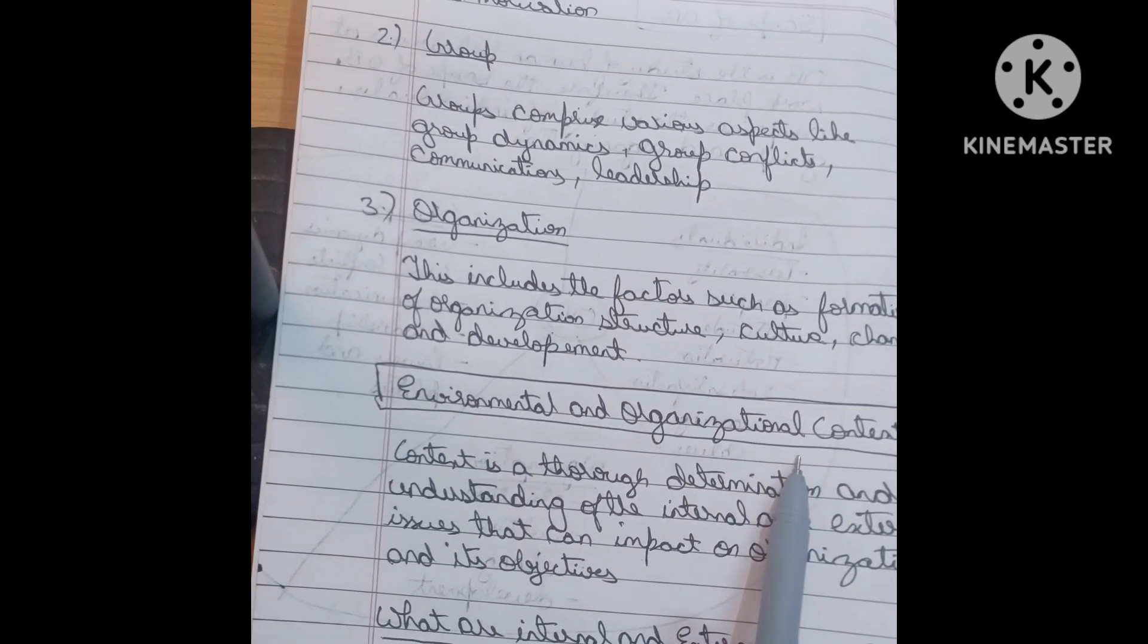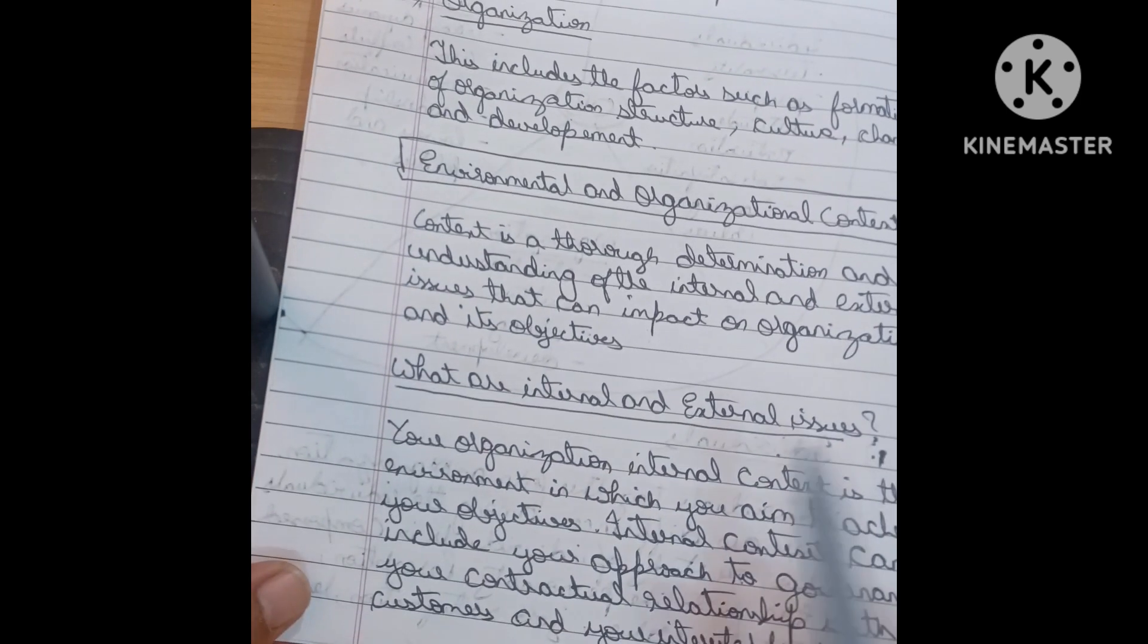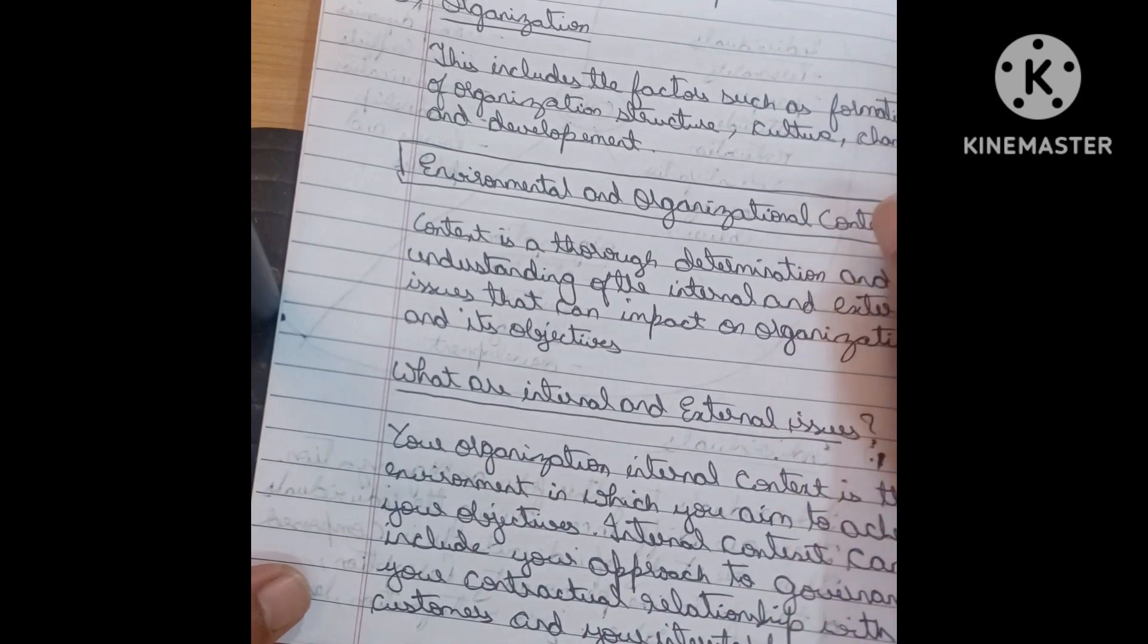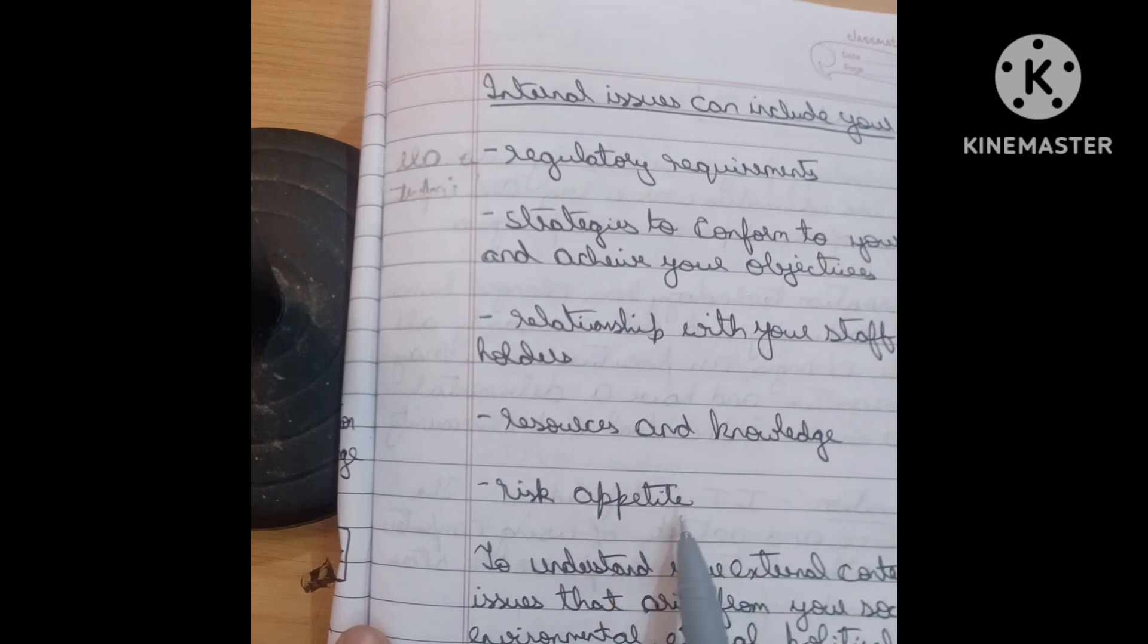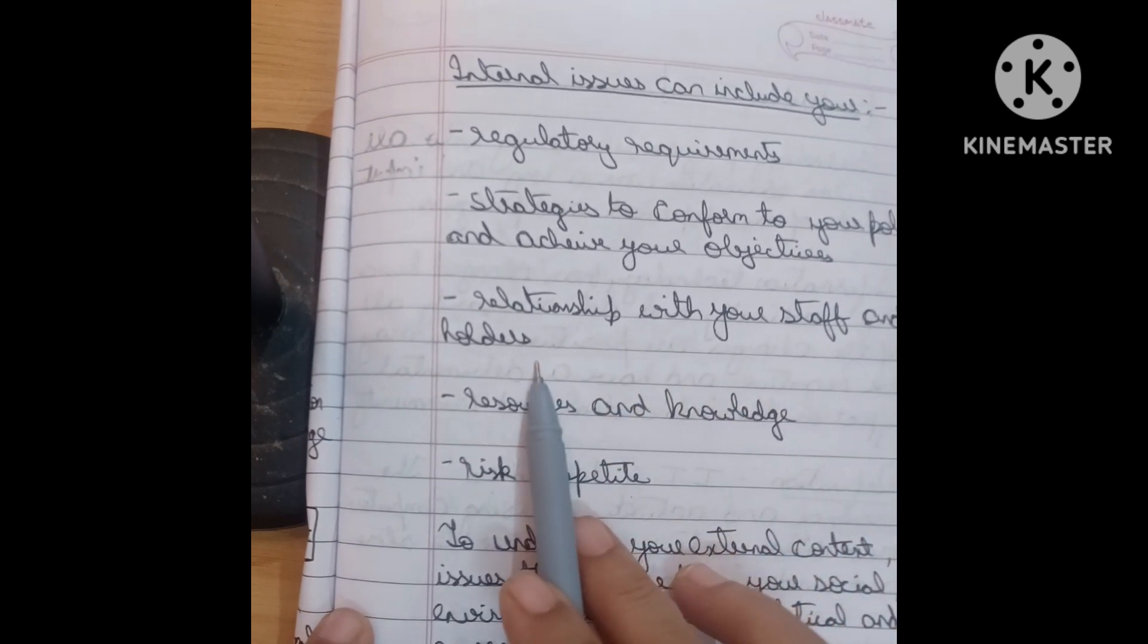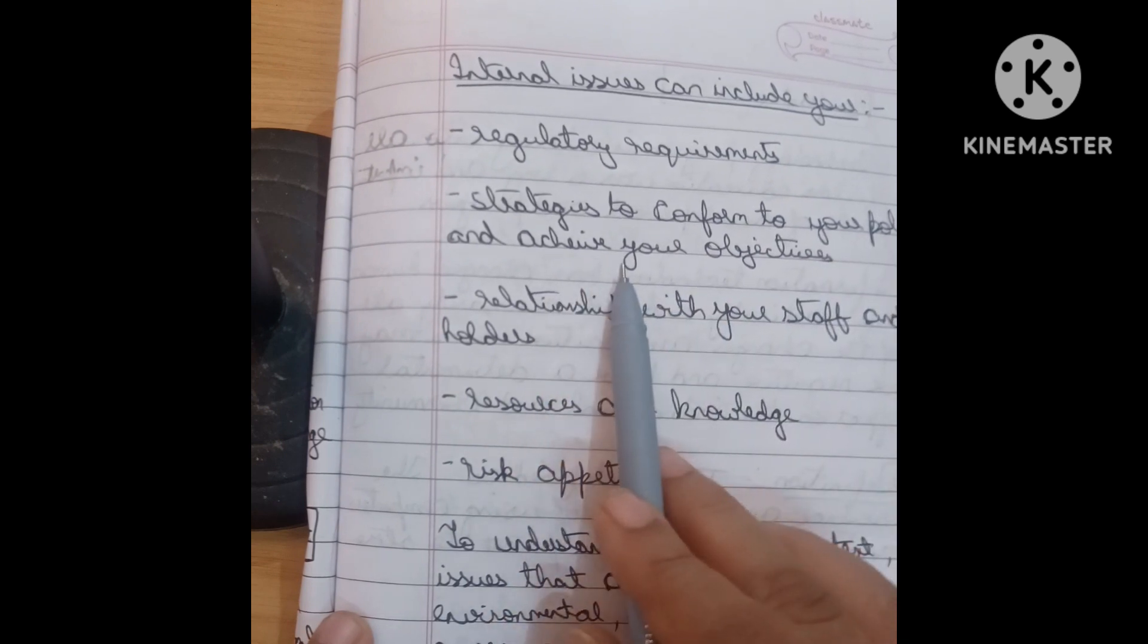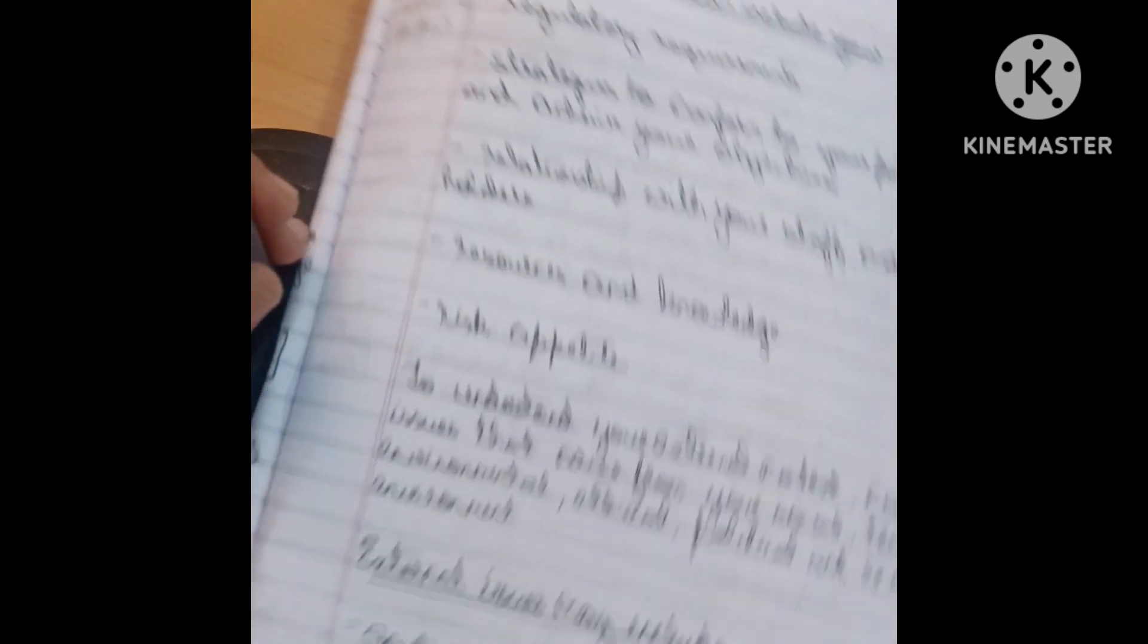Next environment and organization contest. What are the internal and external issues? What are the internal and external issues of a organization? Then what are the internal issues? Internal issues can include EOS, regulatory requirements, risk opposites, resources and knowledge you have to gain and relationship with your staff and stakeholders very important thing and strategies to confirm to your policies and achieve your objectives.